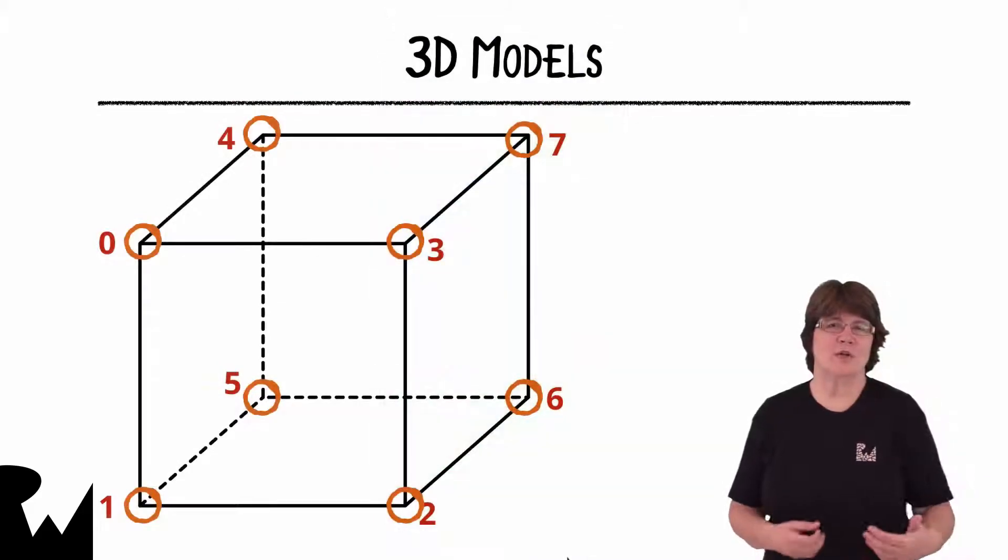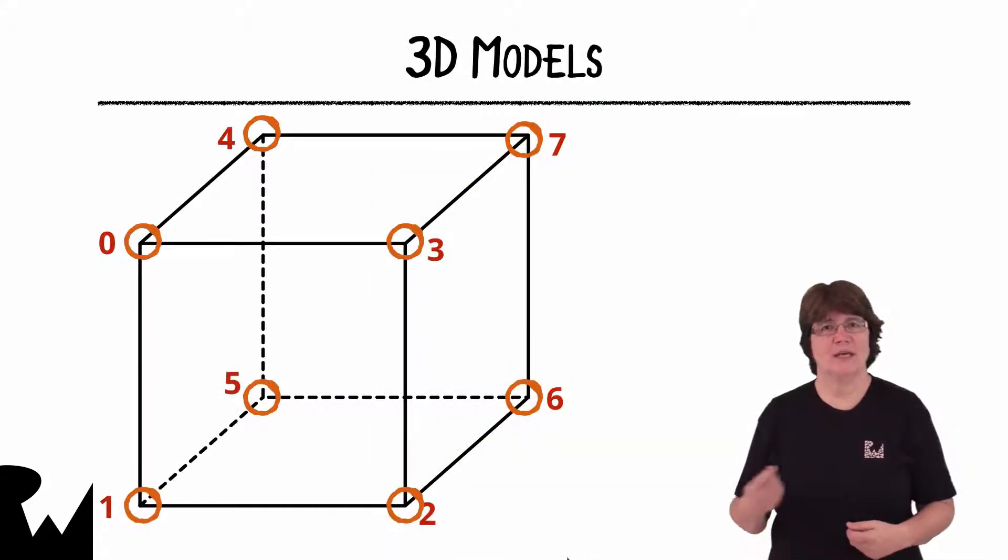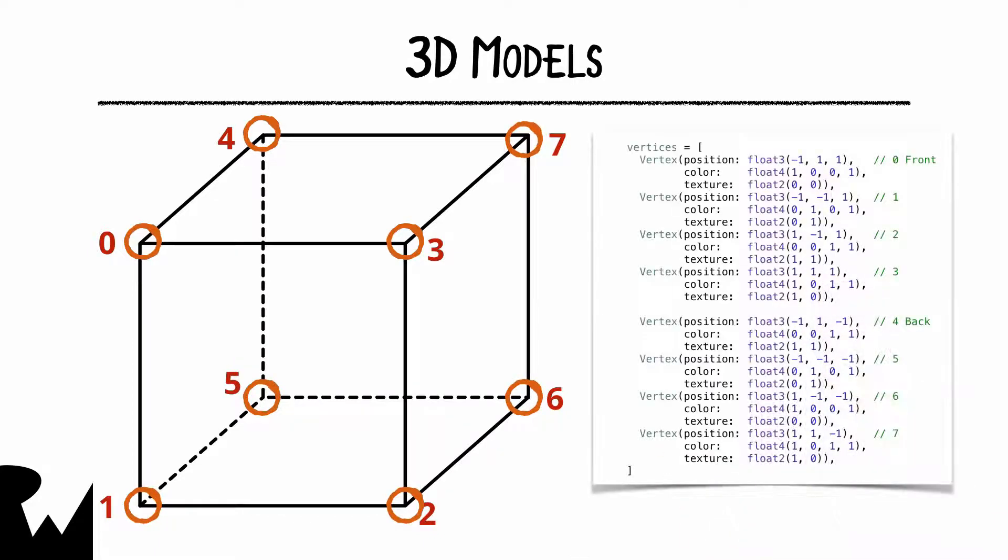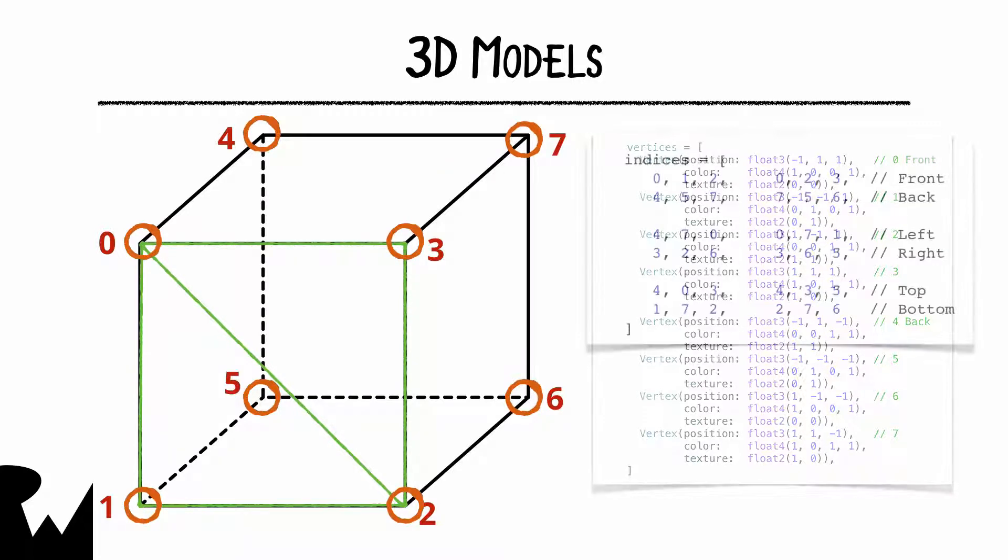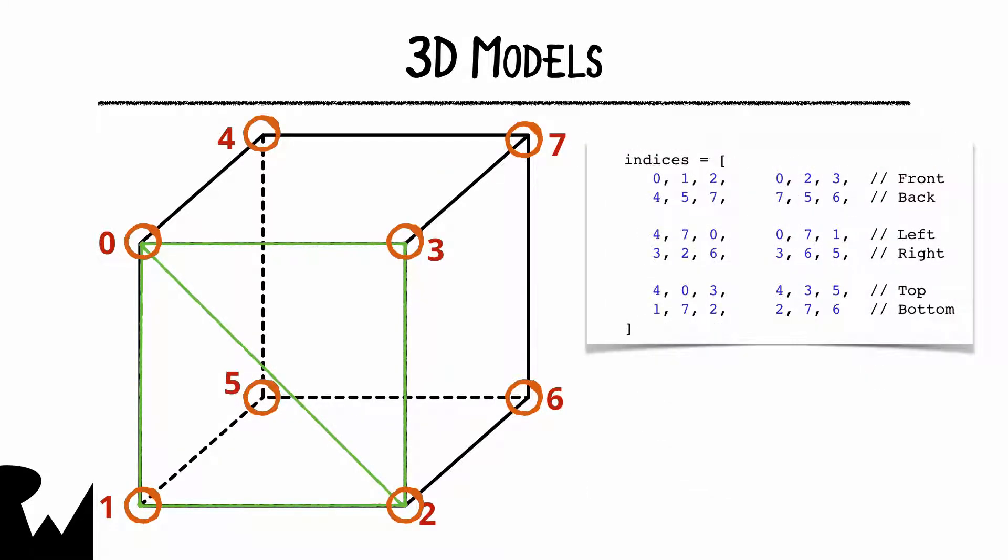Whereas the quad had four vertices, a cube has eight vertices and six sides, also called faces. We'll create a vertices array with these eight vertices. There will be 12 triangles involved because each side has two triangles. And here's the indices array for each triangle.